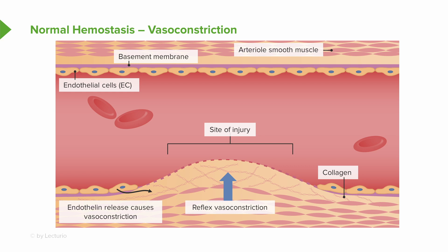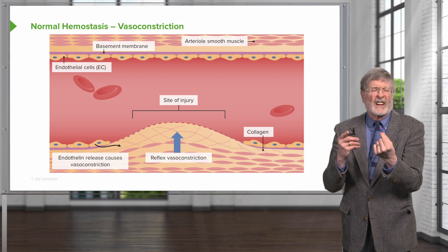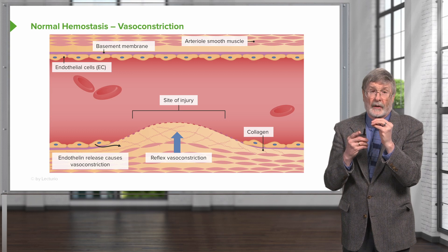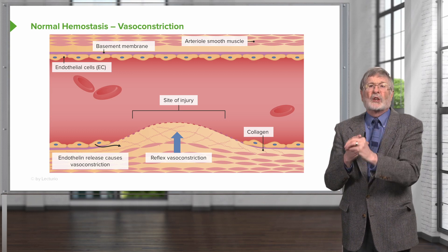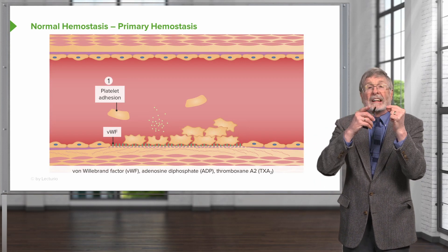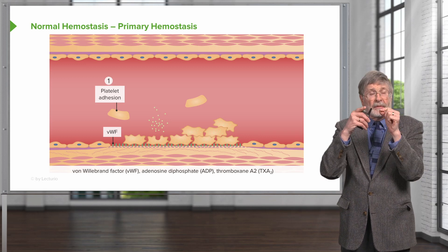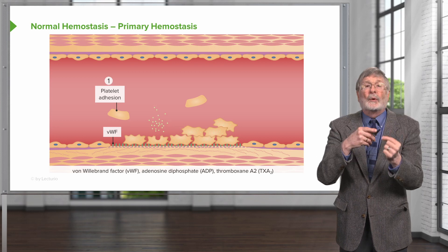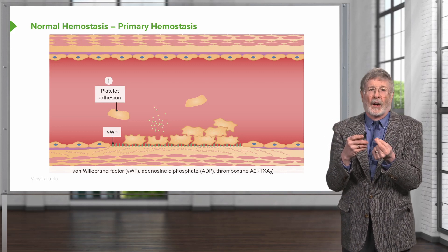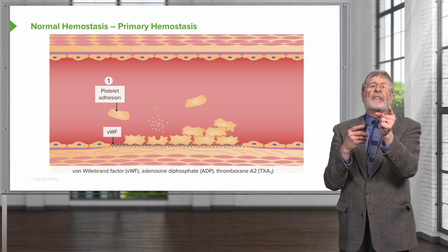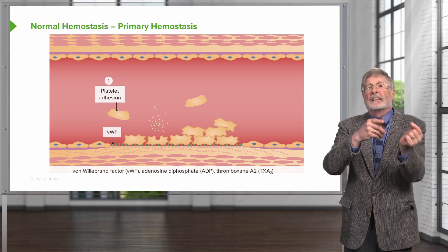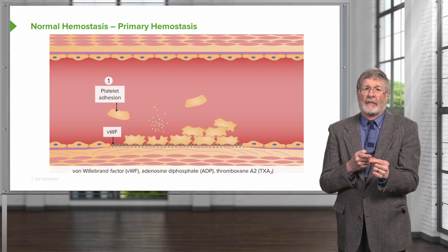That reflex vasoconstriction caused by endothelial release of endothelin will cause diminished flow through the area, which will allow platelets to begin the process of accumulating. Platelets flowing through the bloodstream will, in this area of vasoconstriction, now have abnormal flow, start tumbling, and will be able to interact with various matrix elements underneath where the endothelium has been lost. One of the major factors is von Willebrand factor (VWF), and platelets will adhere to that exposed VWF.